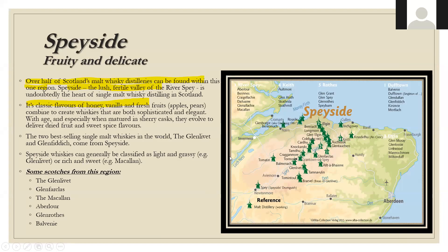Over half of Scotland's malt whiskey distilleries can be found within the Speyside region — the lush, fertile valley of the River Spey is undoubtedly the heart of single malt whiskey distilling in Scotland. Classically you'll find flavors of honey, vanilla, and fresh fruits — a more delicate style. With age, especially when matured in sherry casks, they evolve to deliver dried fruit and sweet spice flavors. The two best-selling single malt whiskeys in the world — The Glenlivet and Glenfiddich — come from Speyside.